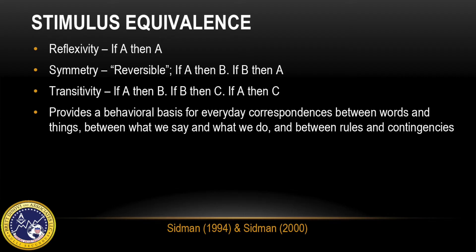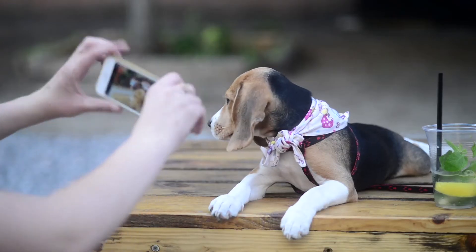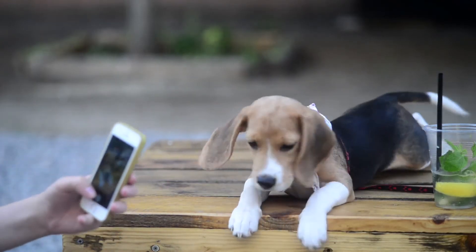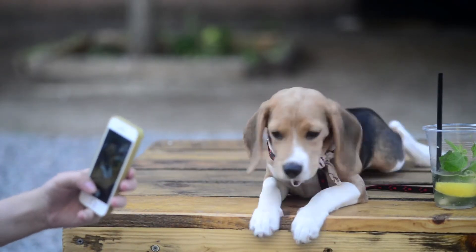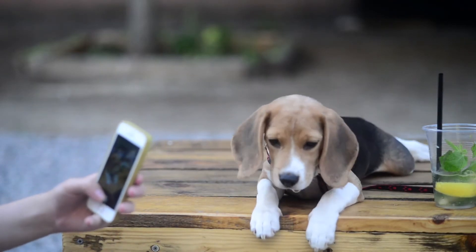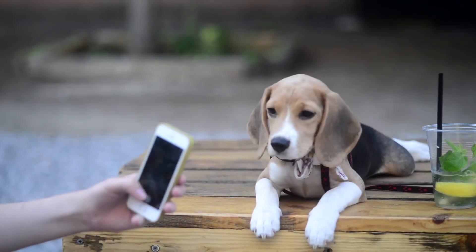Symmetry refers to a reversible property: if A, then B; if B, then A. In other words, a picture of a dog is equivalent to or the same as the spoken word 'dog.' Likewise, the spoken word 'dog' is equivalent to or the same as a picture of the dog.